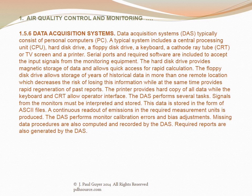Data acquisition systems, abbreviated DAS, typically consist of personal computers, abbreviated PC. A typical system includes a central processing unit (CPU), hard disk drive, floppy disk drive, keyboard, cathode ray tube (CRT) or TV screen, and a printer. Serial ports and required software accept input signals from the monitoring equipment. The hard disk drive provides magnetic storage of data and allows quick access for rapid calculation. The floppy disk drive allows storage of years of historical data in more than one remote location, providing rapid regeneration of past reports. The printer provides hard copy of all data, while the keyboard and CRT allow operator interface.